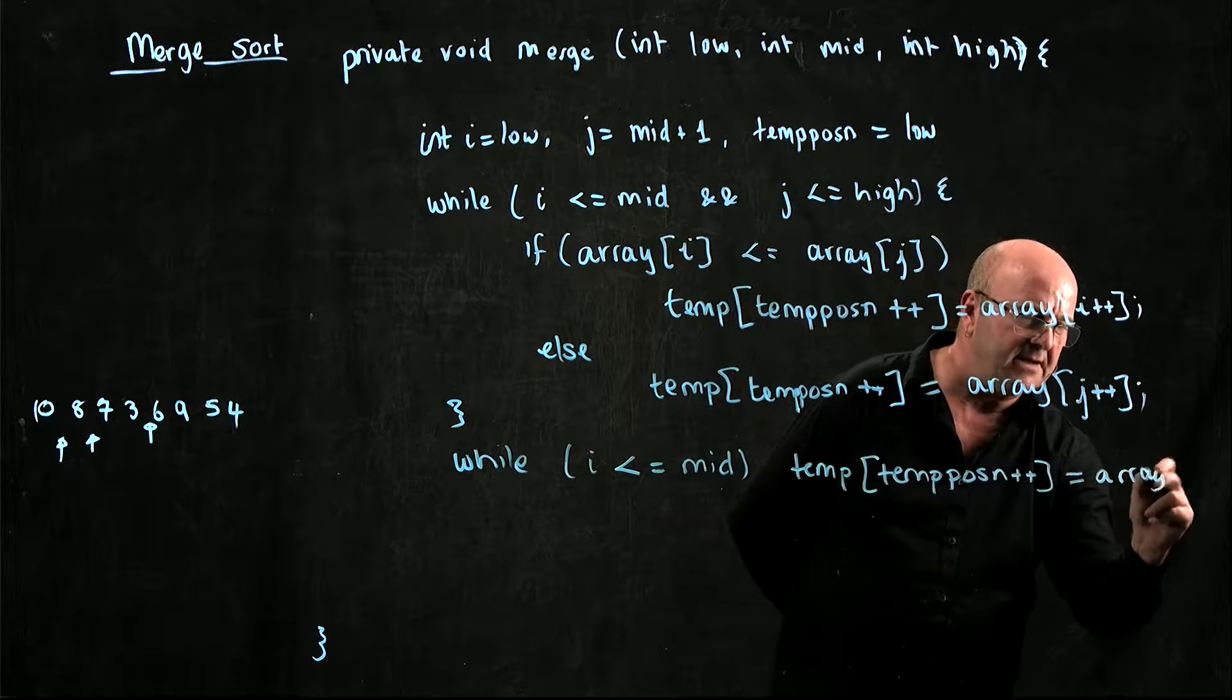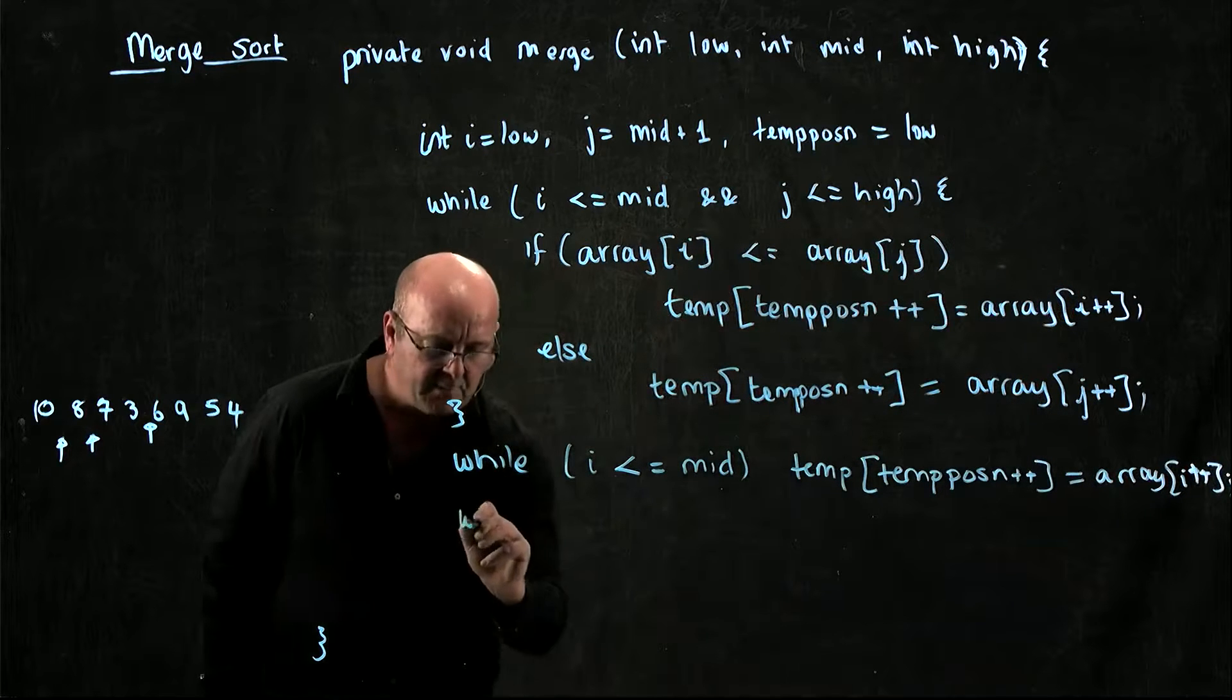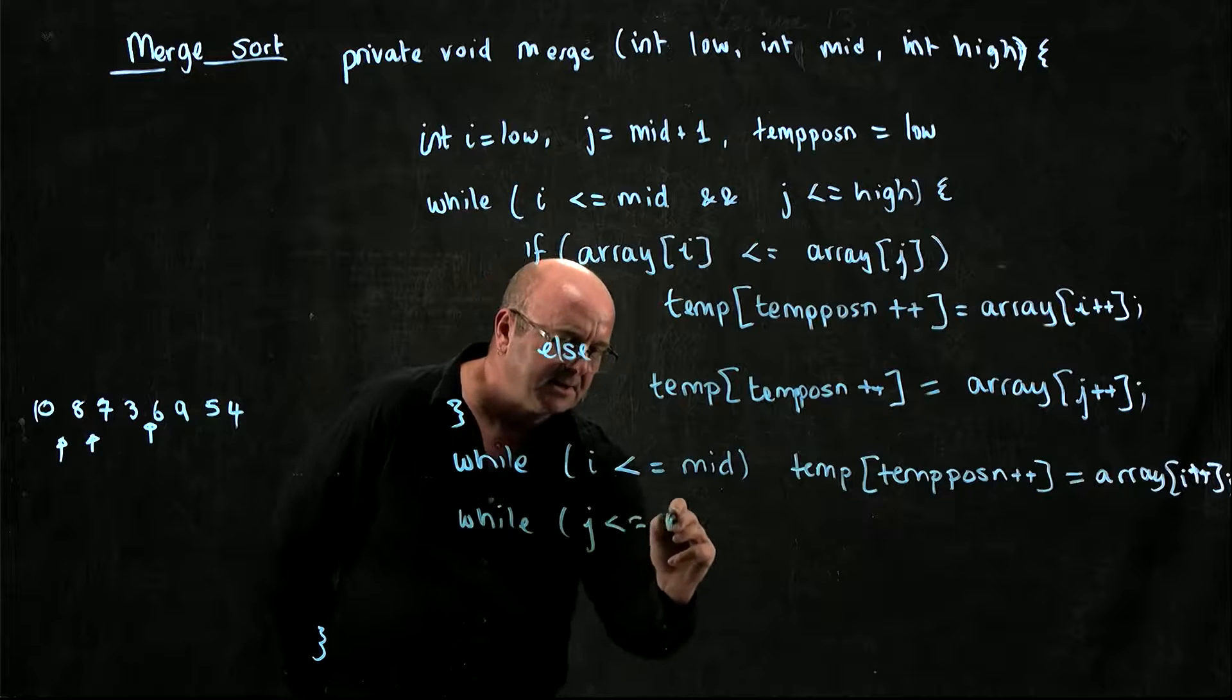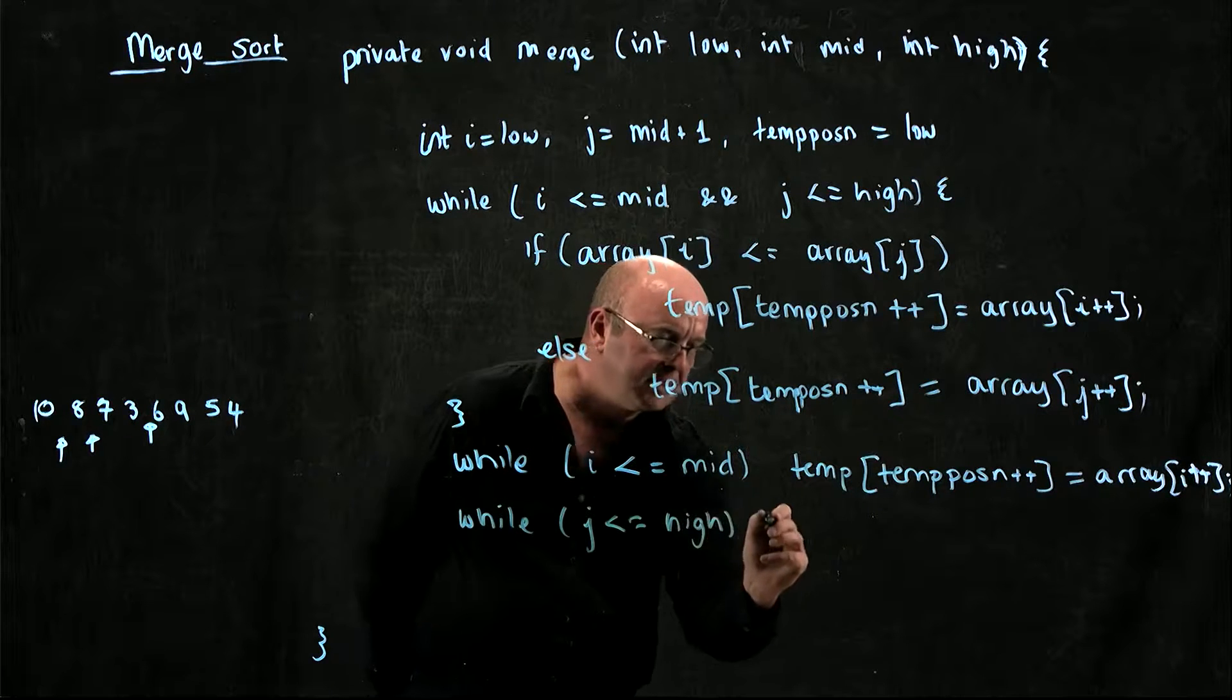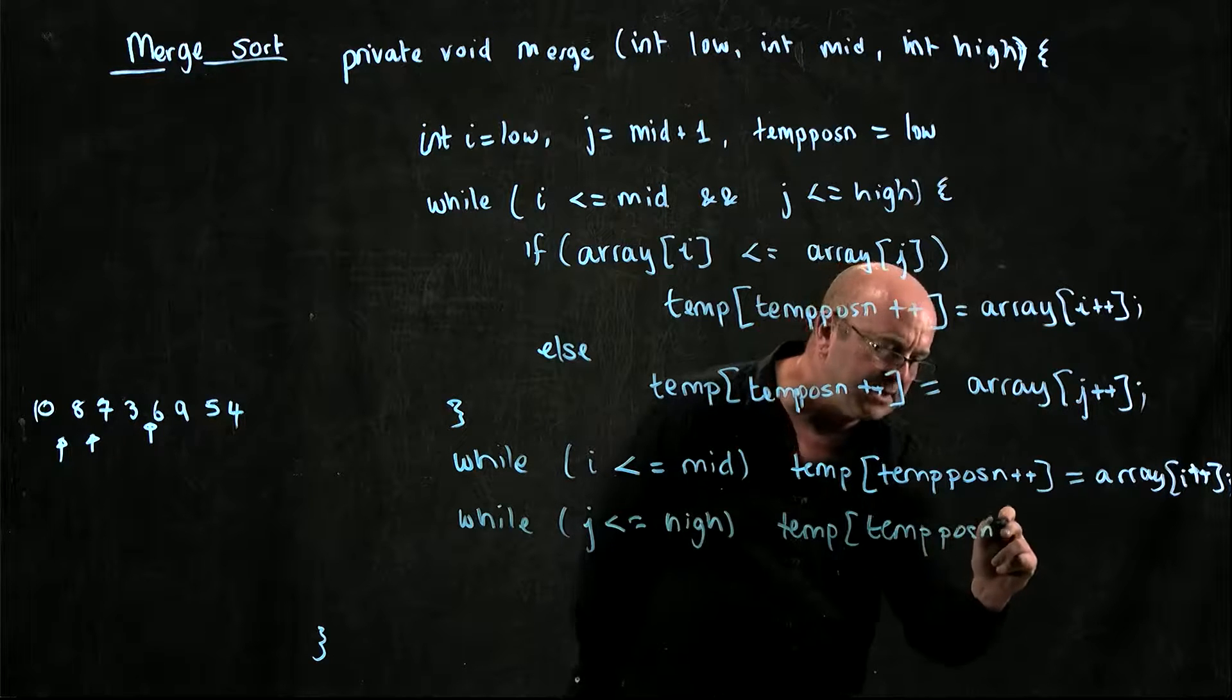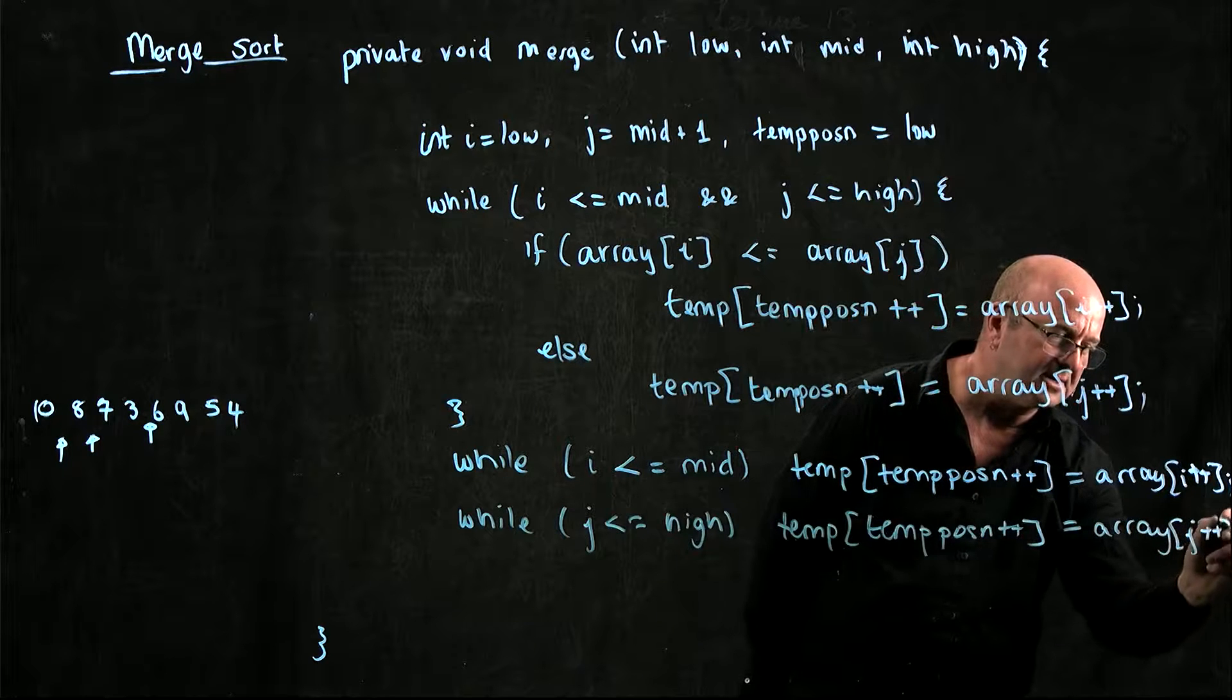And we're just running out to mid, and we're just running out the end of the array, and while j is less than or equal to high, temp position plus plus is equal to array[j] plus plus.